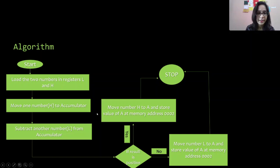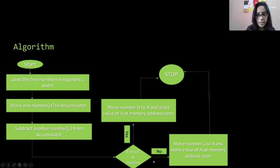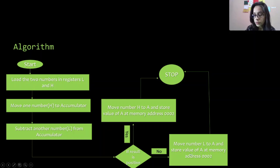If the numbers were the other way around — if the greater number was in L, say L was 25 and H was 15 — then subtracting 25 from 15 gives a negative result. A negative result means the number in L is greater, so we move L to the accumulator and store that value at memory address 0002, and the program ends.